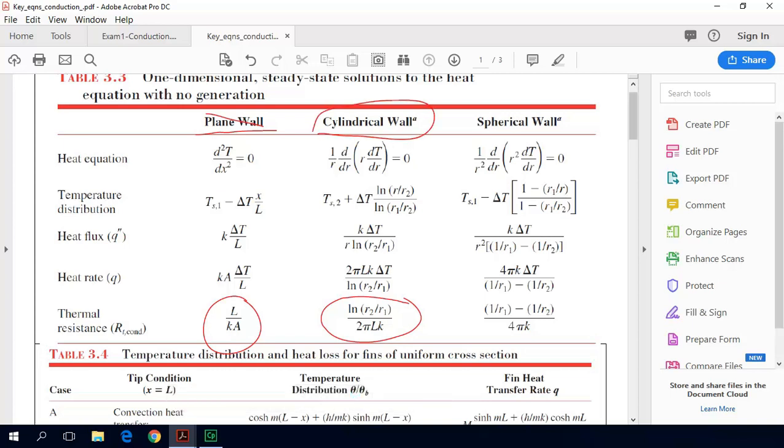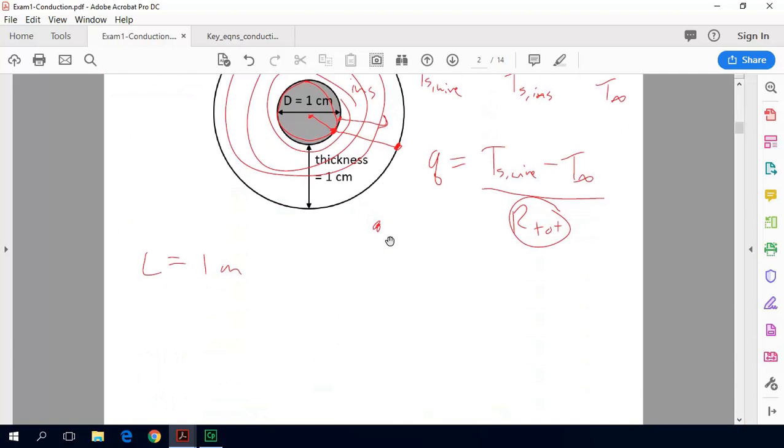Which is that our conductive thermal resistance is the natural log of R2 where R2 is the outer radius and R1 where R1 is the inner radius divided by 2 pi LK. So just plugging into that equation we get R_cond is equal to the natural log of R2 divided by R1 on the bottom we have 2 pi L - L is our length - times K which is our thermal conductivity.